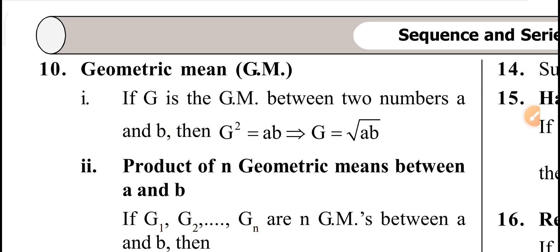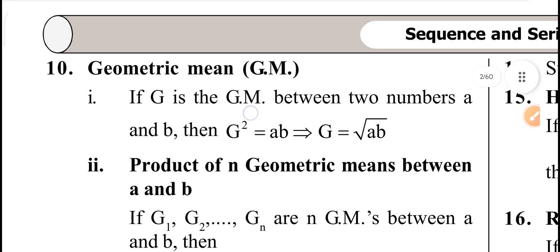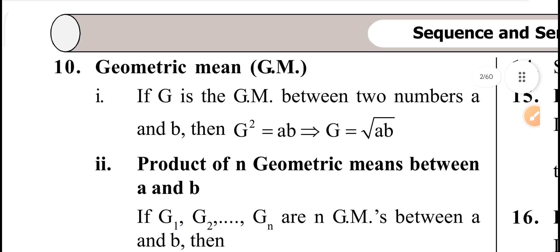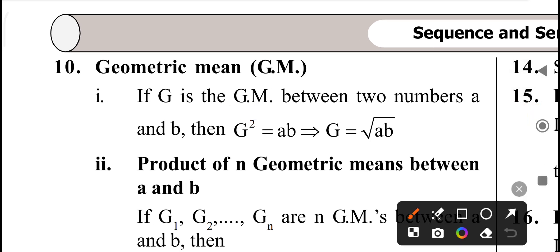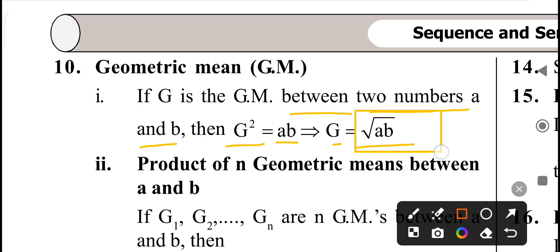Geometric mean: if G is the GM between two numbers A and B, then G square equal to AB, and G equal to root AB. This is the main formula.